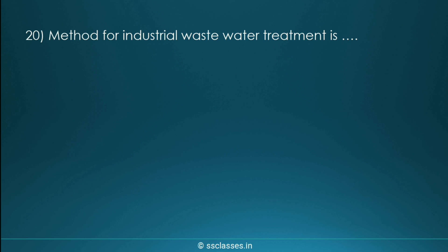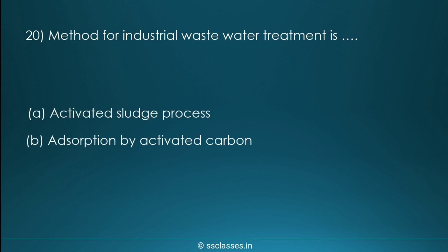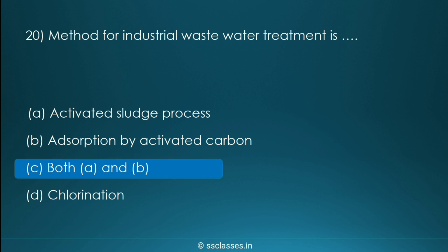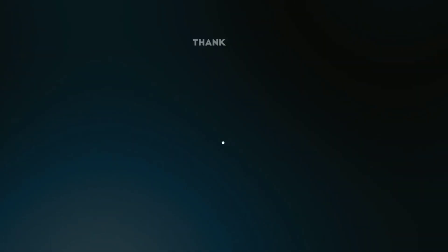Question twenty: the method for industrial wastewater treatment is which? Options are activated sludge process, adsorption by activated carbon, both A and B, or chlorination. The correct option is both A and B — activated sludge process and adsorption by activated carbon. So we have now discussed all 20 questions. Note that question 11 was repeated and question 19 was missed, so the total remains 20 questions covered.